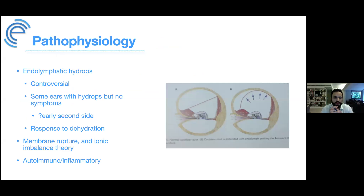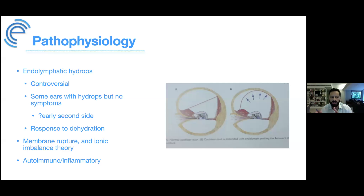Speaking of pathophysiology, you can't discuss Meniere's disease without discussing endolymphatic hydrops. This is the prevailing theory — an excess of endolymph causing distension of the endolymphatic compartment. Whether it's excess production or reduced absorption is a long discussion. It's controversial whether hydrops is actually a cause of the disease or merely an epiphenomenon.